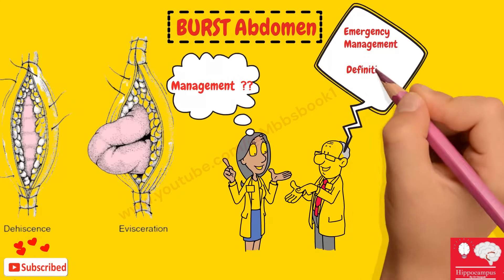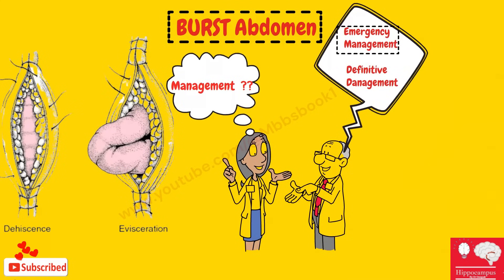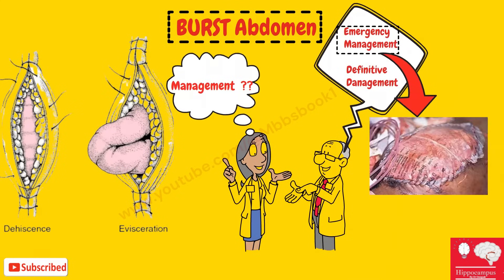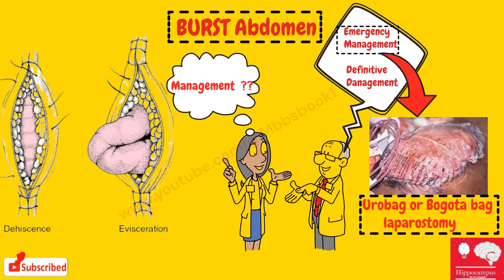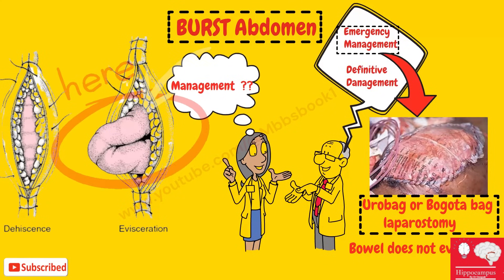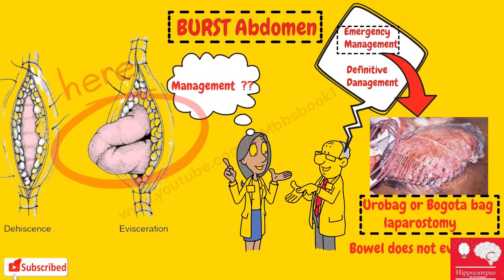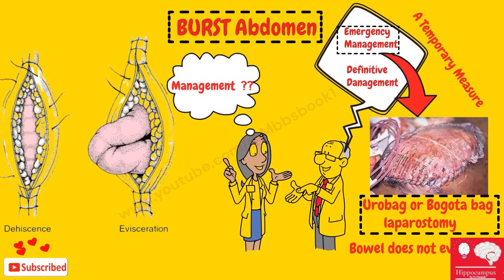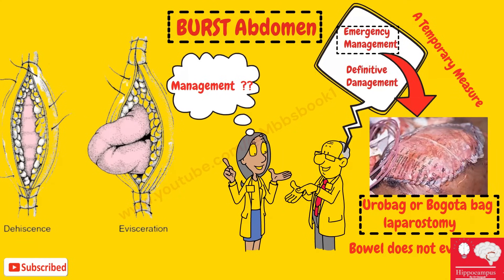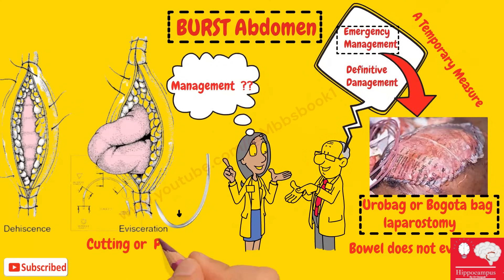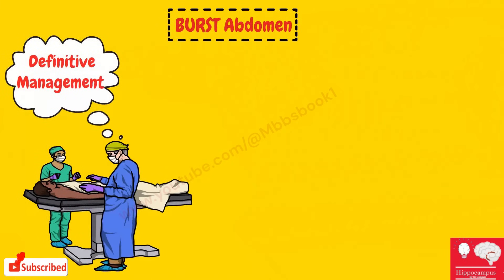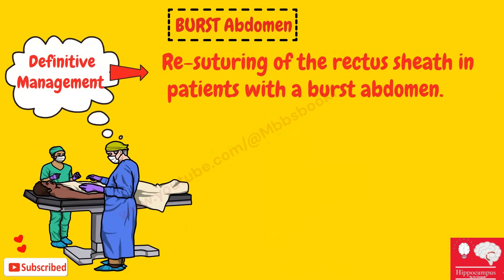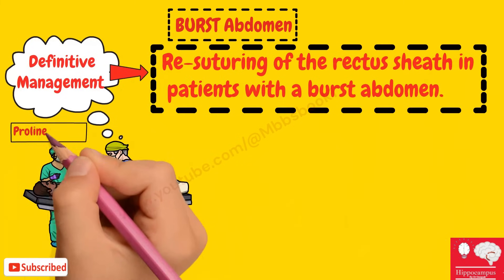For burst abdomen management, there is emergency management and definitive management. The emergency management is known as urobag or bag-of-bag laparostomy — the urobag is sutured to the rectus sheath or skin so that the bowel does not eviscerate. This is a temporary measure and usually requires a cutting or reverse cutting needle. The definitive management is re-suturing of the rectus sheath using prolene sutures, which are non-absorbable sutures.